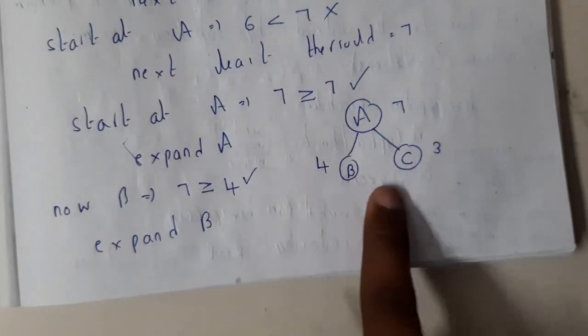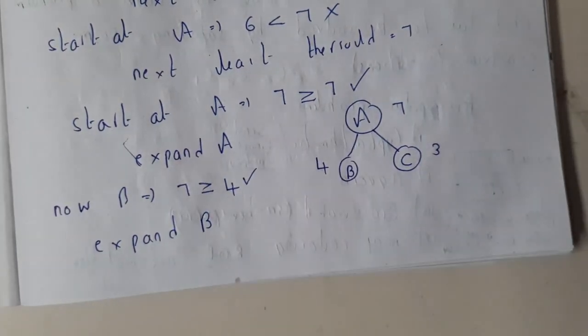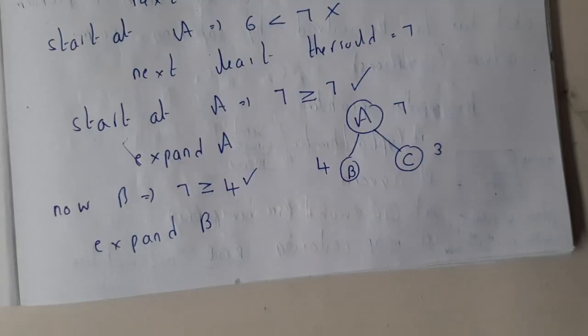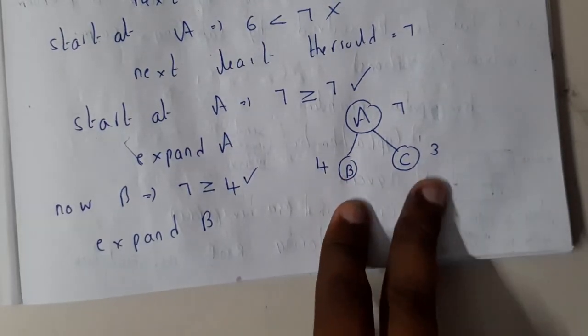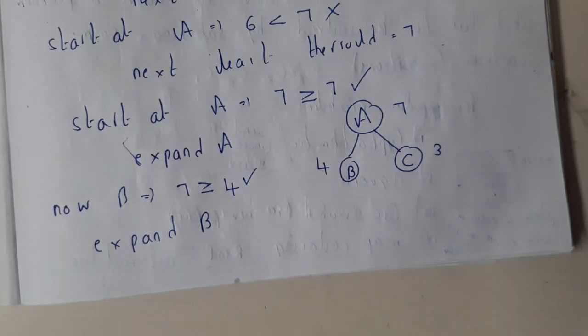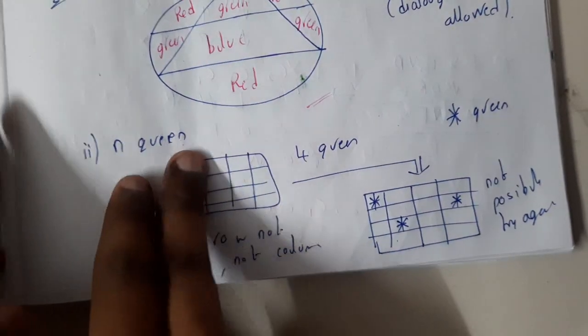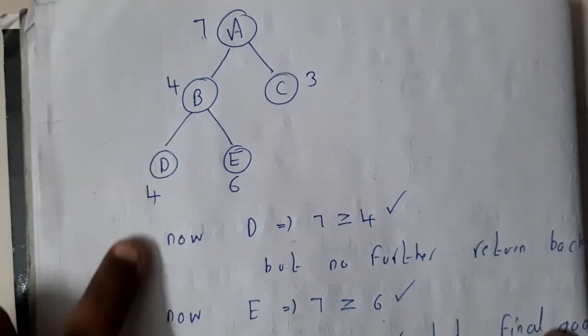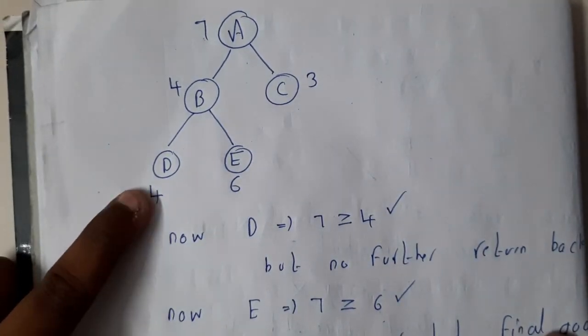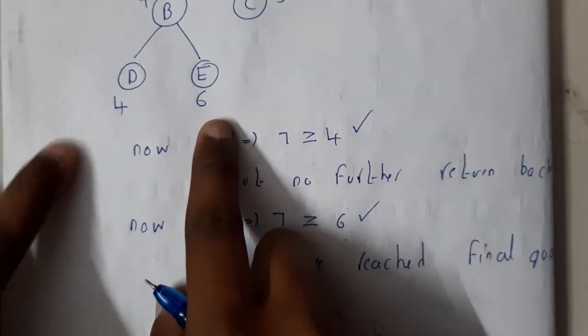So now with the help of 7 we will be expanding it. So we will be getting B and C. So we will be drawing in this way. So once you expand 7, so after that, what is the value here? Sorry. So now we are having here B and C, right? So now here we will be expanding B. So from D, where you will be going? So from D we will be getting like this.